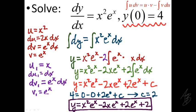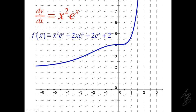We had to use integration by parts twice — the first use simplified the integral but it wasn't simple enough, so we applied it again. There are times when we'll need to repeat this process multiple times, and we'll look at tabular integration for those cases. The slope field for this differential equation confirms that our particular solution passes through the initial condition at (0, 4) and follows the slope segments nicely.